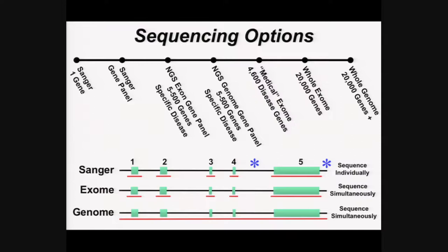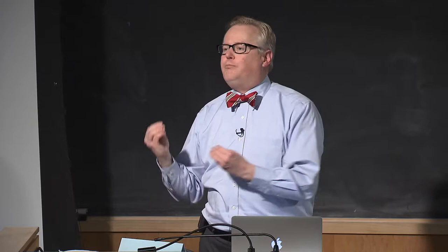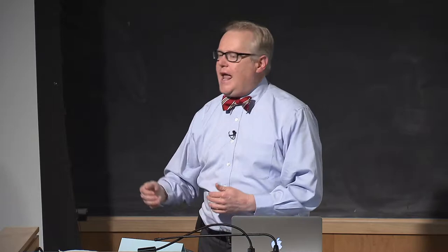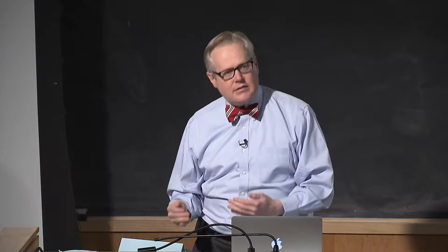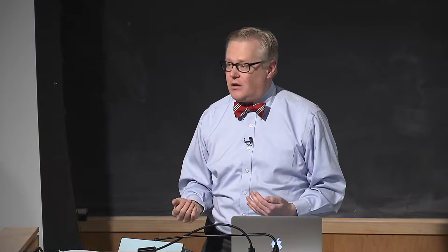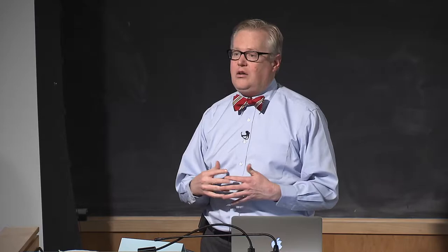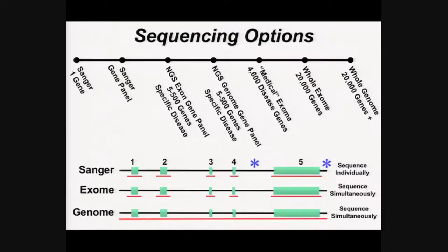Jumping immediately to exome sequencing is not necessarily the best approach. The spectrum runs from Sanger sequencing of one gene all the way to whole genome sequencing of 20,000 genes. If a five-year-old boy presents with recurrent pneumonias, very low immunoglobulins, and no B cells — that's X-linked agammaglobulinemia until proven otherwise. There's no need to exome sequence; he has a BTK defect, and single-gene sequencing is most cost-effective. But when three or four genes need sequencing, next-gen approaches become more economical.